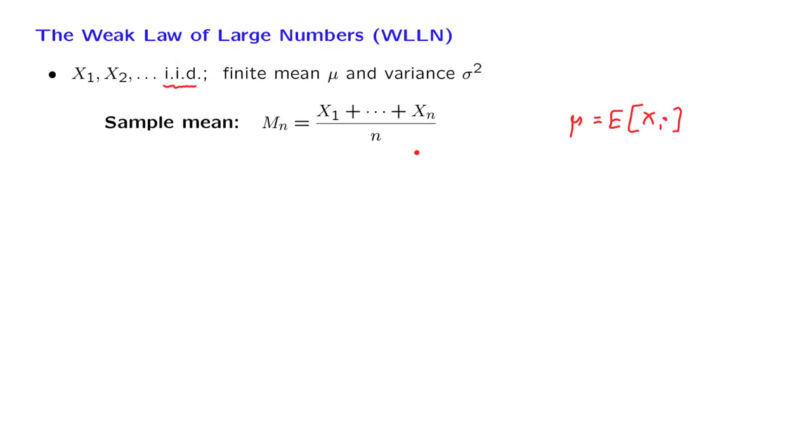Let us now look at the properties of the sample mean. Let us calculate its expectation. By the way, this object here involves two different kinds of averaging. The sample mean averages over the values observed during one long experiment.